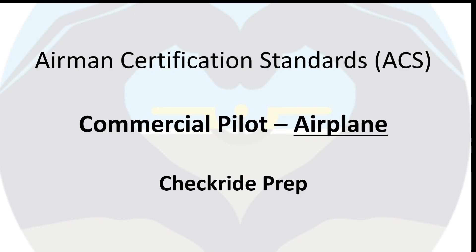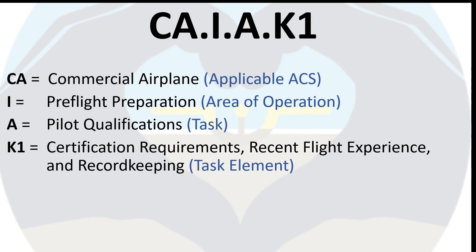If you find these videos helpful and would like to see more content like this, leave a like on this video and consider subscribing. We will begin with ACS code CA.1.A.K1, broken down as follows: the applicable ACS is CA, which stands for commercial airplane. Next we have area of operations one, pre-flight preparation. Then we have task A, pilot qualification, and finally task element K1, which covers certification requirements, recent flight experience, and record keeping.